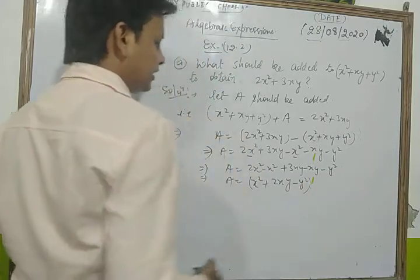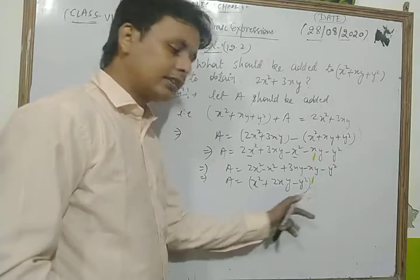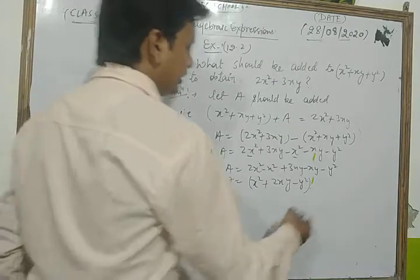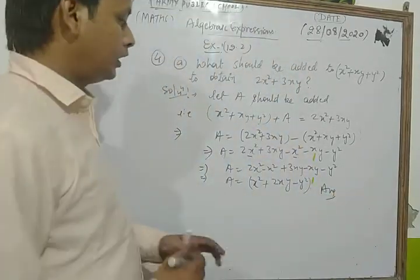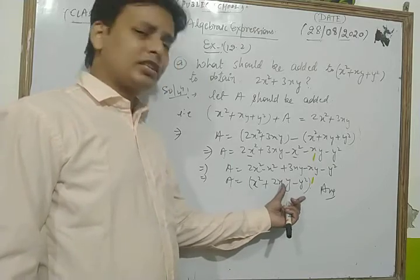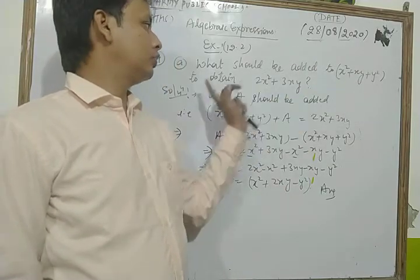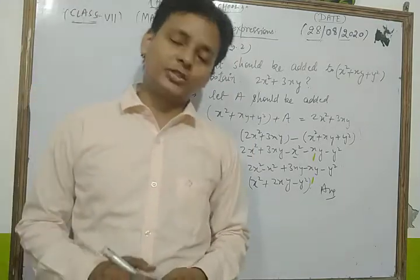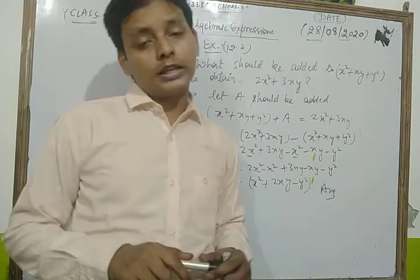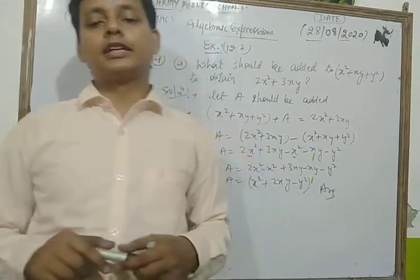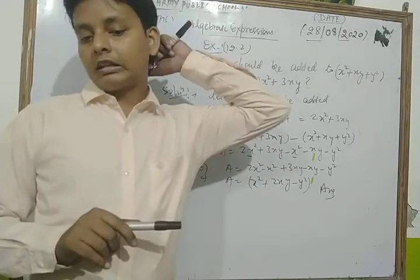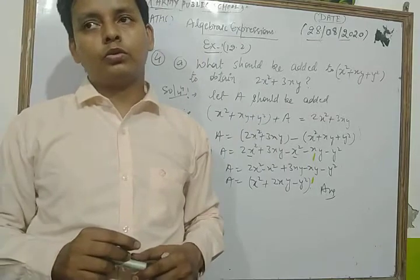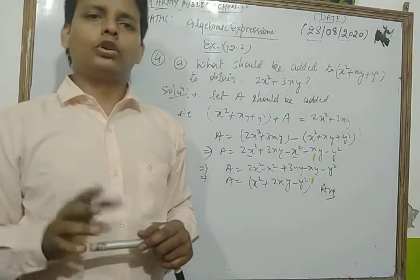Unlike terms are never added or subtracted. So the required answer is x² plus 2xy minus y². This expression x² plus 2xy minus y² should be added to x² plus xy plus y² to obtain 2x² plus 3xy.